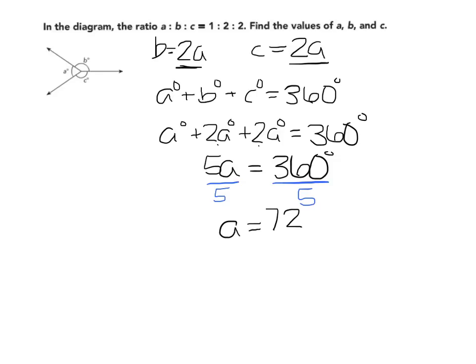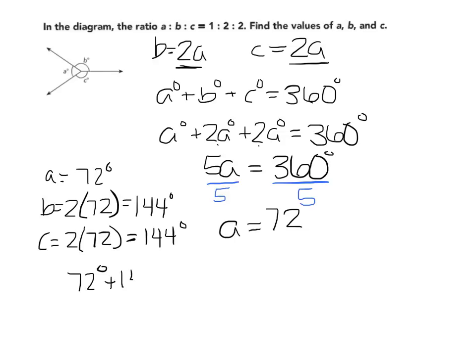I can then check each of my angles to find my values for B and C. So B equals 2 times 72, which gives me 144 degrees. C equals 2 times 72 degrees, and I know that A will equal 72 degrees. When I add all of these together, again, to check my work, I will get that these will equal 360 degrees.